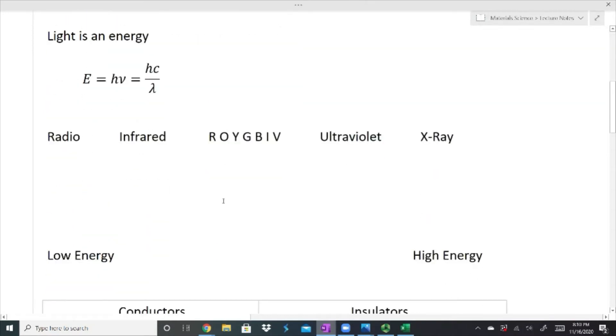Real quick, light is an energy, and we have some equations here for the energy of light. It has different frequencies, so we have our frequencies here, and we can start off with our low energy side such as radio waves. We move through to infrared, then to our visible spectrum ROYGBIV, we get into our ultraviolet and x-ray. There are other ones in here; these are just some of the main ones.